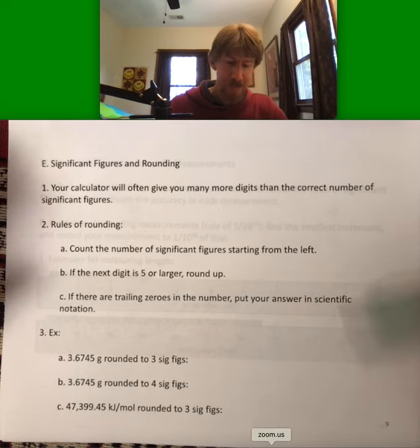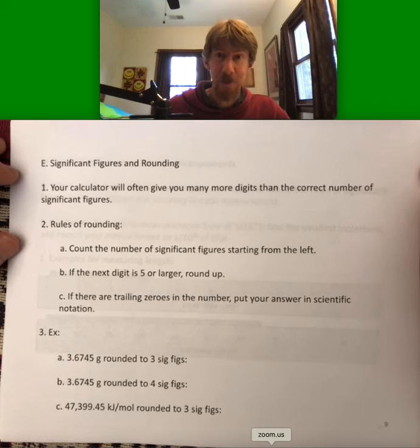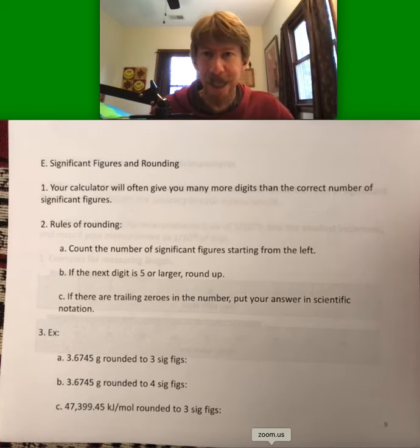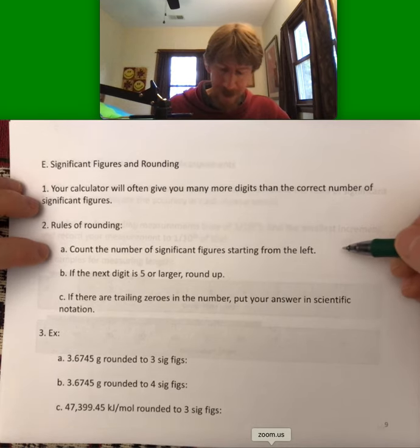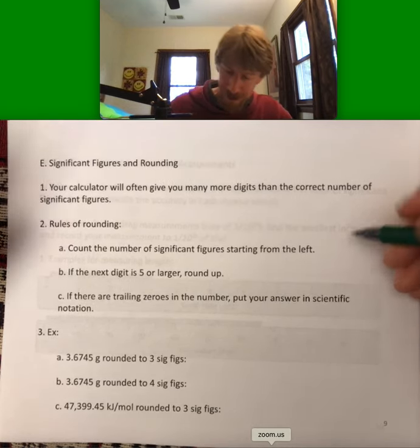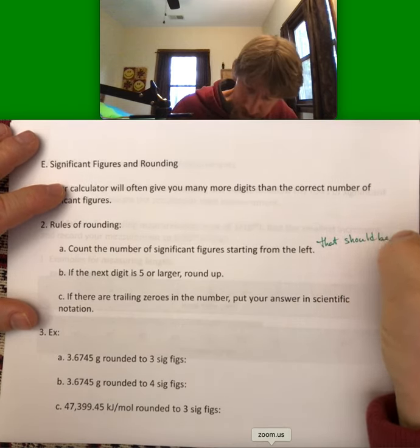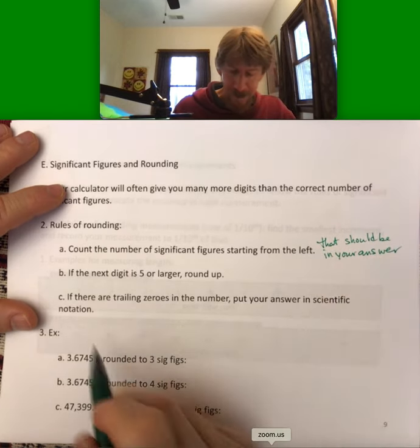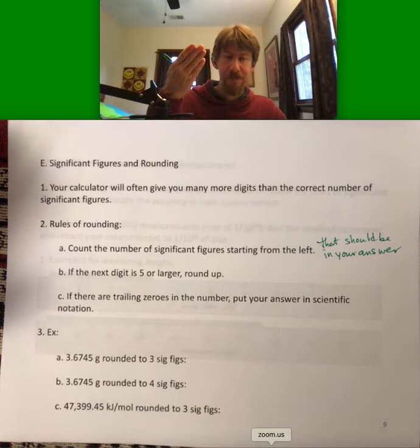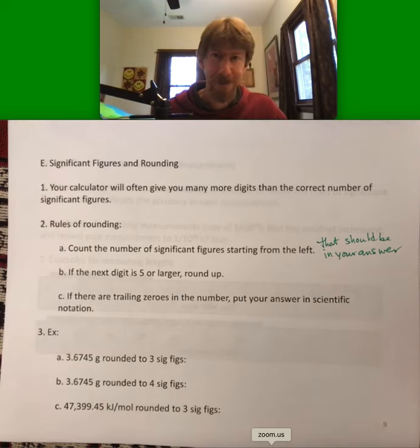Now let's do significant figures and rounding. We will see that this is also an important part, but it's basically the same rounding rules you're probably familiar with from other classes and from any other math that you've done. Count the number of significant figures starting from the left that should be in your answer. If the next digit is five or larger, round up. If there are trailing zeros in the number, put your answer in scientific notation.